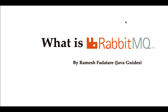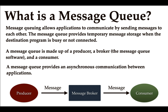In this lecture we'll look at what is RabbitMQ. First, let's understand what is a message queue. Message queuing allows applications to communicate by sending messages to each other. The message queue provides temporary message storage when the destination program is busy or not connected. It is made up of a producer, broker, and consumer.